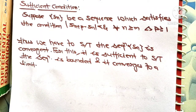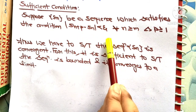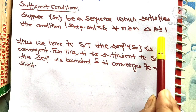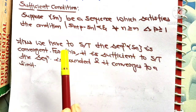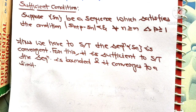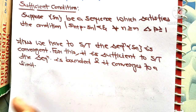Now we are going to prove the sufficient condition. Suppose Sn is any sequence that satisfies the condition |Sn+p − Sn| < epsilon for all n ≥ m and p ≥ 1 — this is given. We have to show that the sequence Sn is convergent, and for this we need to show the sequence is bounded and converges to a limit.